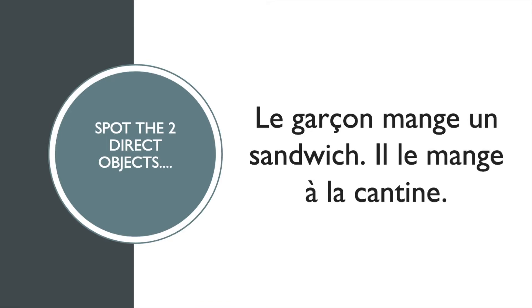'Le garçon mange un sandwich. Il le mange à la cantine.' Yes, 'un sandwich' and 'le' are the two direct objects. In the first sentence, 'un sandwich' is the direct object because it receives the action of 'mange,' eating. In 'Il le mange,' 'le' stands as the direct object because it receives the action of 'mange.' 'Le' stands for 'un sandwich,' which is masculine singular, and that's why we use 'le.'